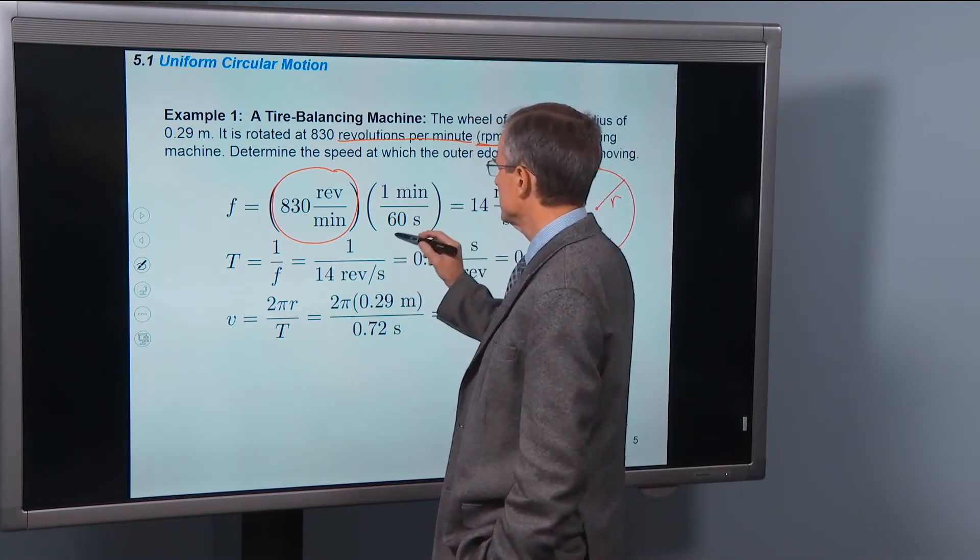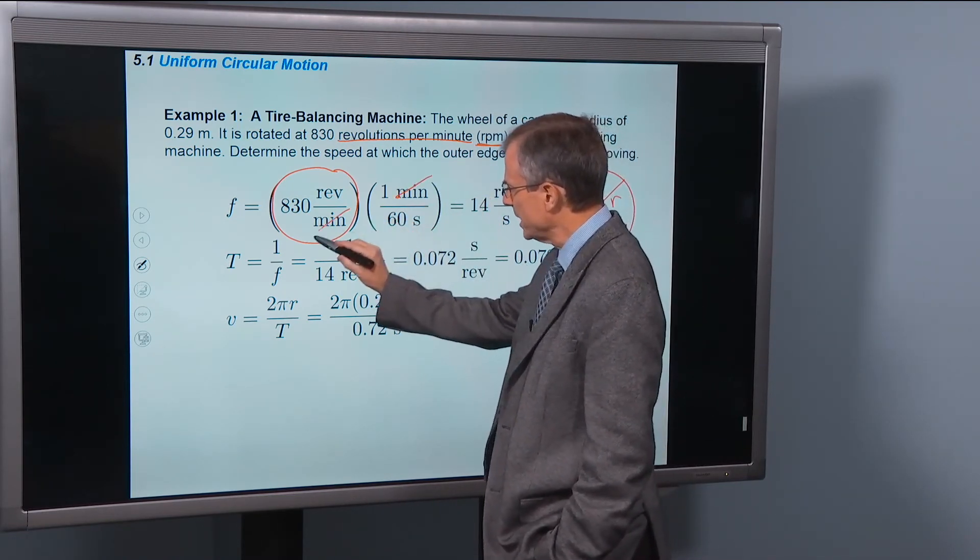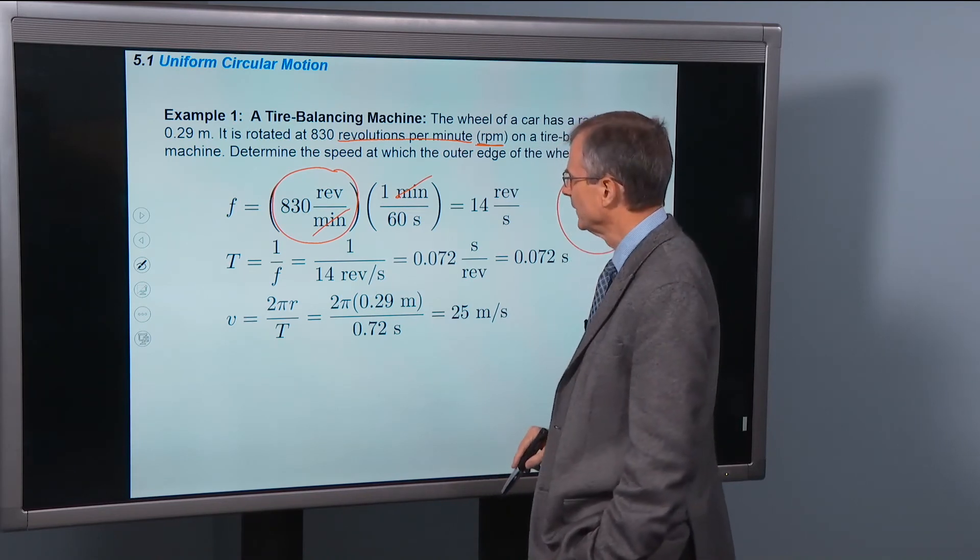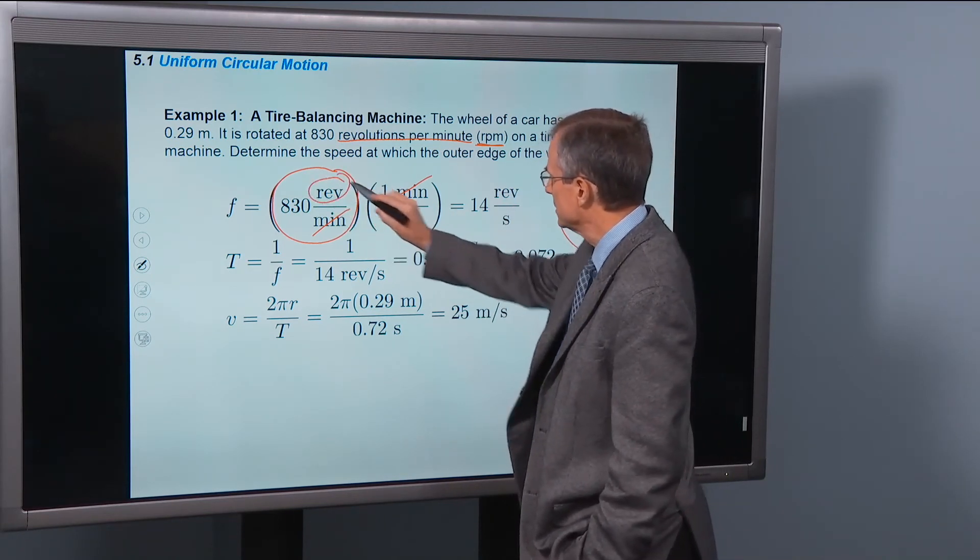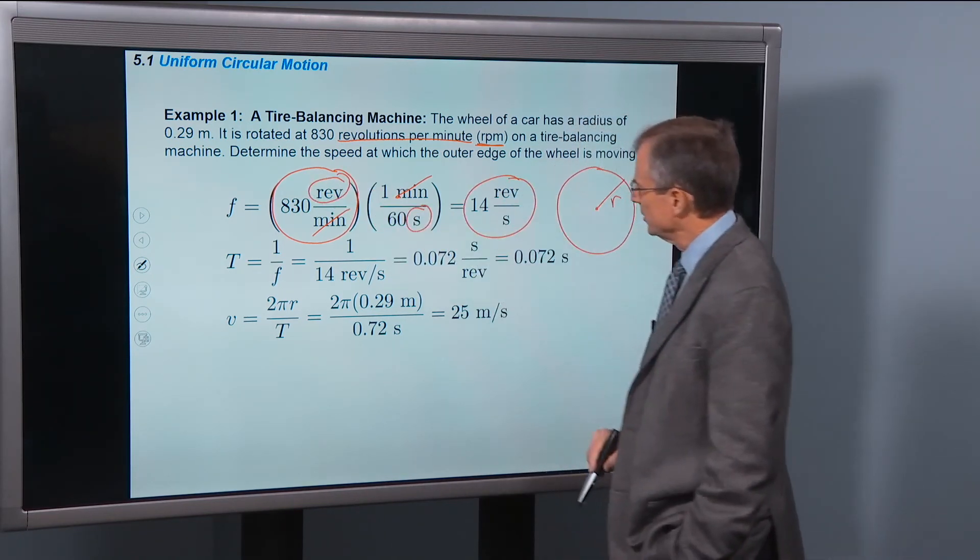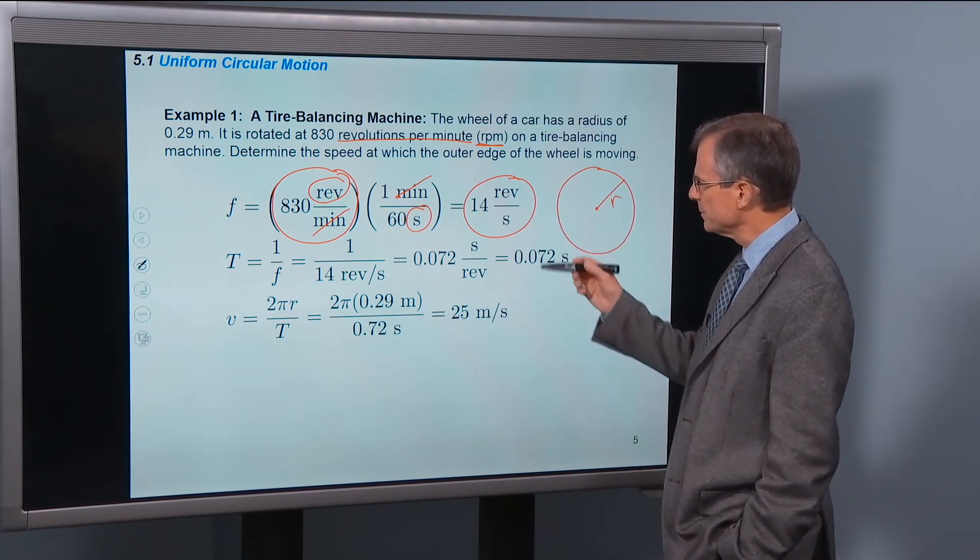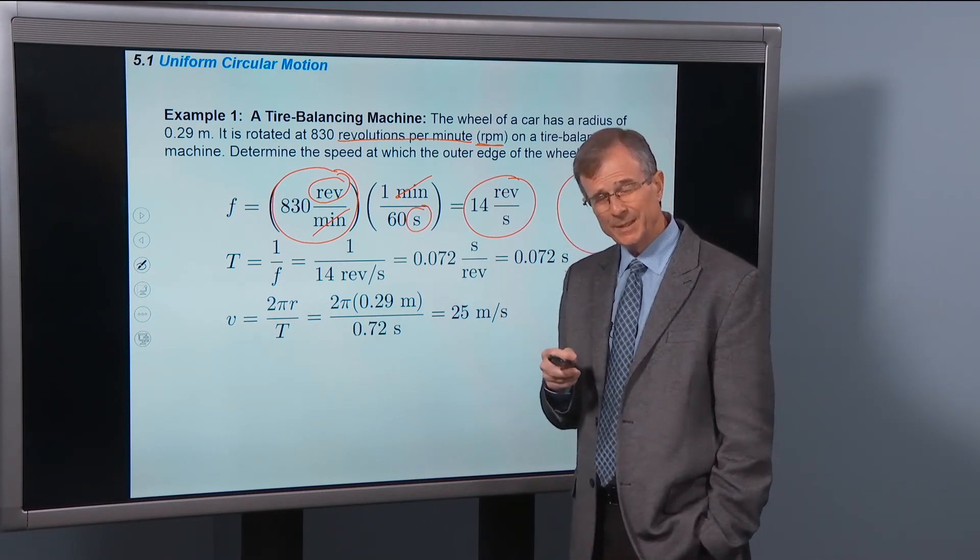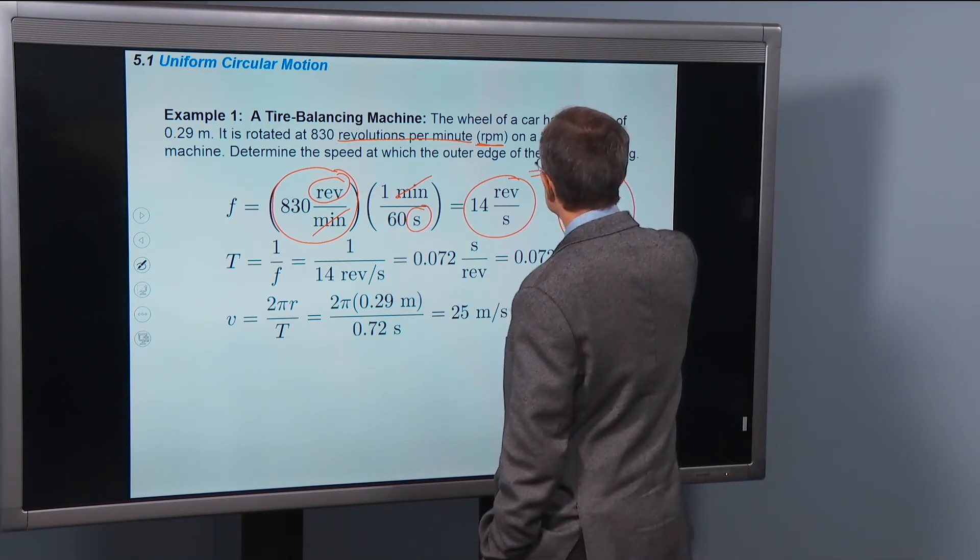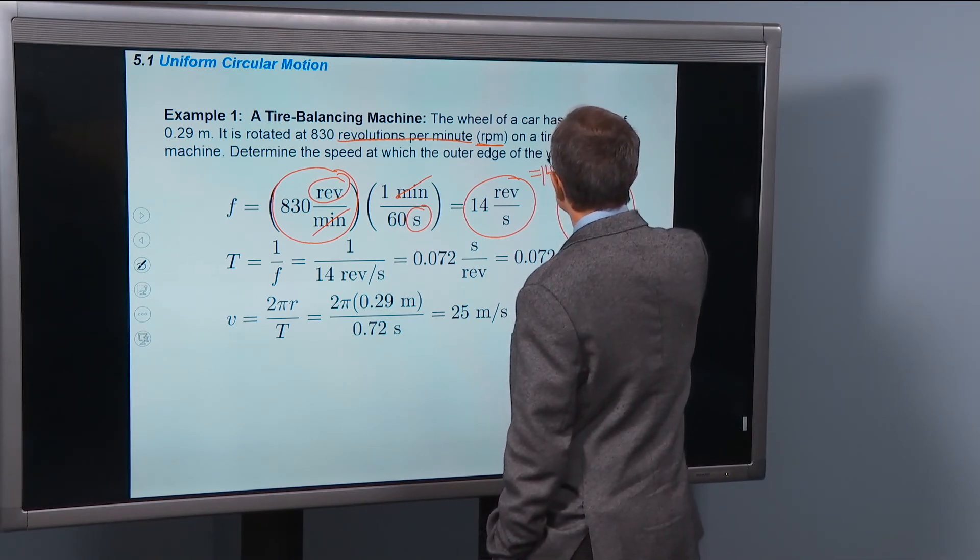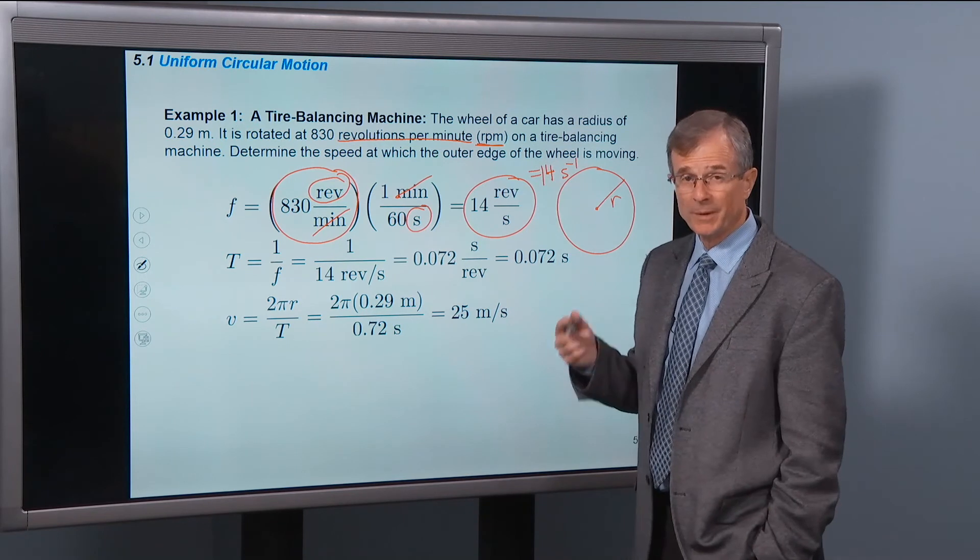And then convert minutes to seconds. I'm going to divide by 60 seconds and multiply by one minute in order to have those units cancel each other. And that will give us 830 divided by 60 revolutions per second. So that's the frequency written in revolutions per second. And revolutions is not really technically a unit. You can also write this as 14 inverse seconds. It's 14 somethings over seconds. Those somethings are revolutions.